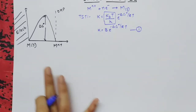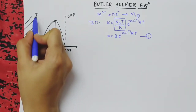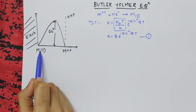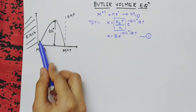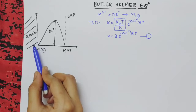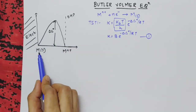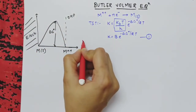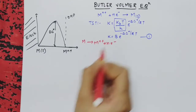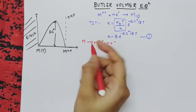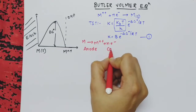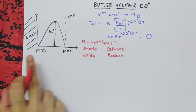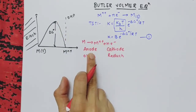Consider this graph. The metal solid is converted into metal ionic form, and the metal ionic is converted back into metal solid. This is by the oxidation process and by the reduction process respectively. ΔG* is the energy required to convert metal solid to metal ionic and metal ionic to metal solid. Metal converting into M^(n+) plus electrons is the oxidation process. In electrochemistry there are two electrodes — anode and cathode. Anode means oxidation, cathode means reduction.